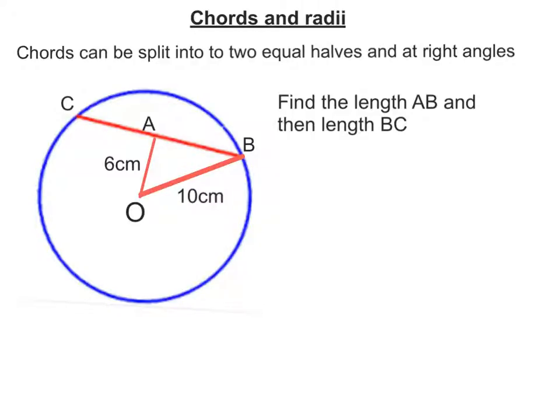So what that means is if I split it down the middle, which is what it's been doing, to put these into two halves, I also get a right angle there. So if I was to draw out the triangle OAB, I know that OB is 10 and OA is 6. So I can use Pythagoras to work out AB.